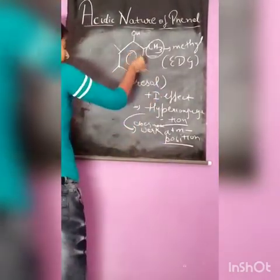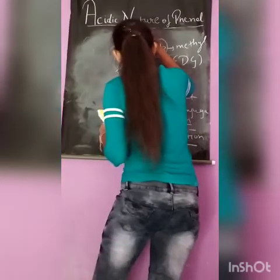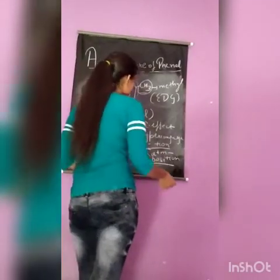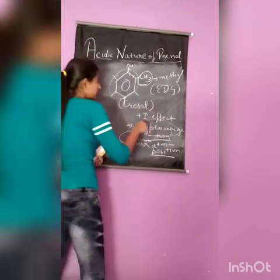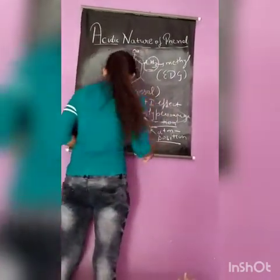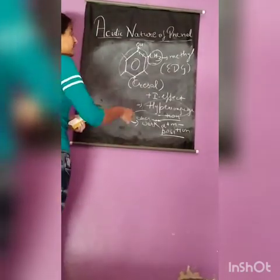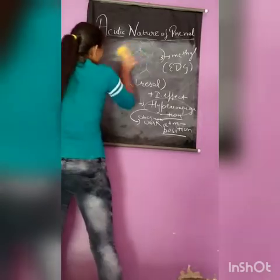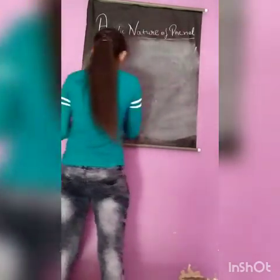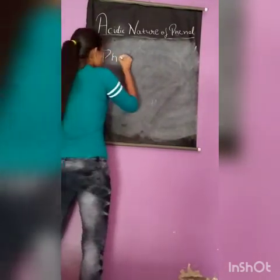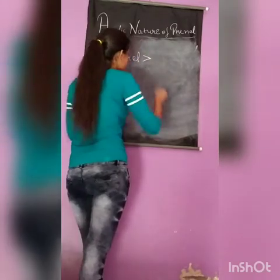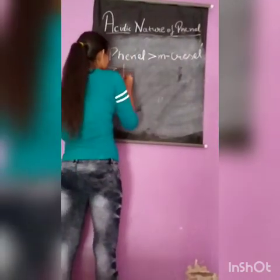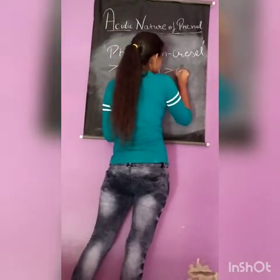Since the plus-I effect increases electron density on the O-H bond, and both plus-I effect and hyperconjugation increase electron density on phenol, the release of H-positive becomes harder and the acidic nature decreases. The acidity order when methyl groups are attached is: phenol > meta-cresol > para-cresol > ortho-cresol.